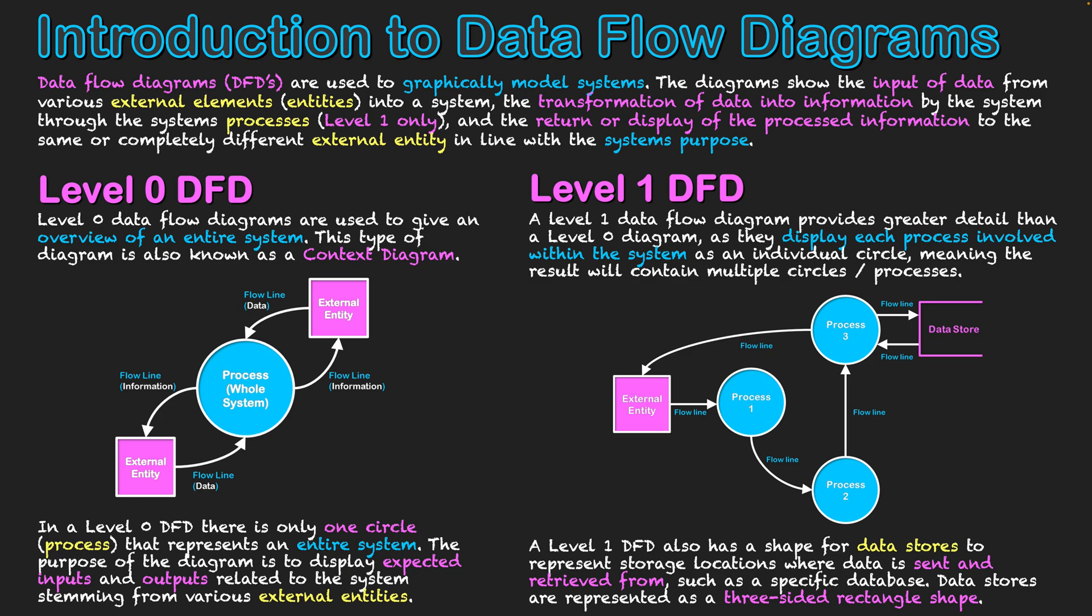They're represented by a three-sided rectangle. That's not an error in my picture - it's not meant to be a square missing a side. It is a three-sided rectangle representing that data store. You can see there in process three, whatever's happening at that stage is referring to data stored on a database, and then after it's processed new information with that database data, it is updating it and storing it back to that database in a new updated version before information is potentially sent back to my external entity.